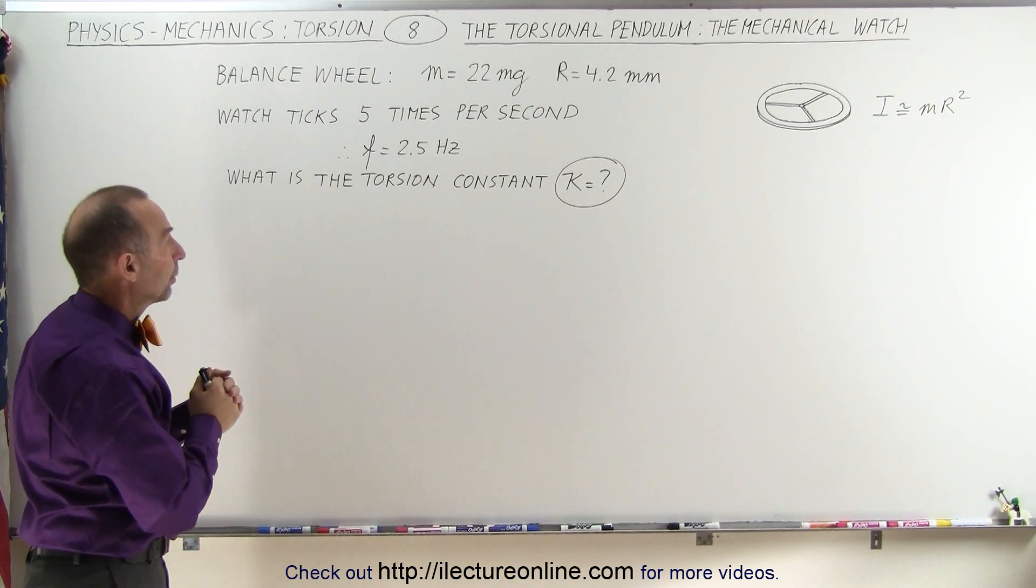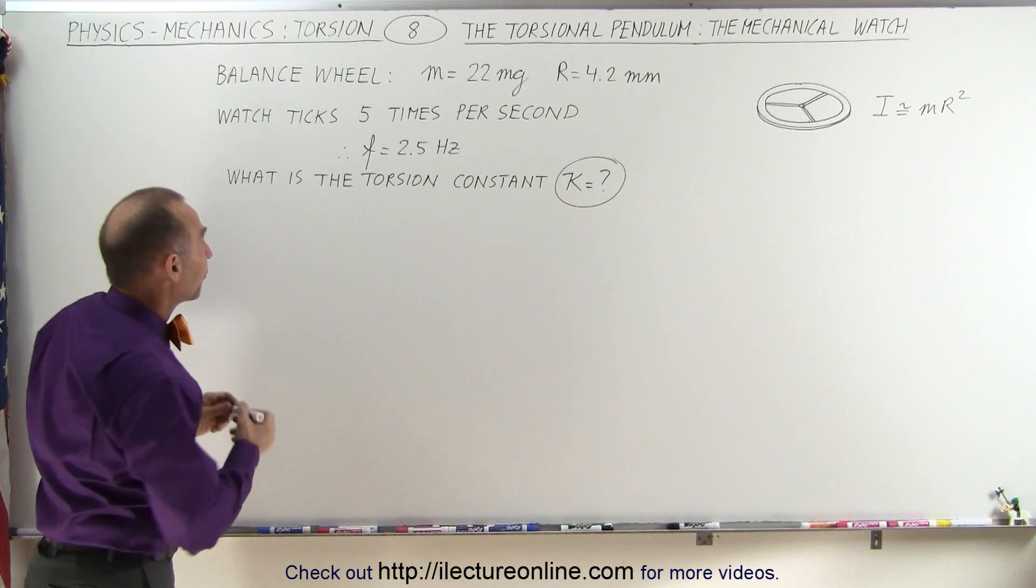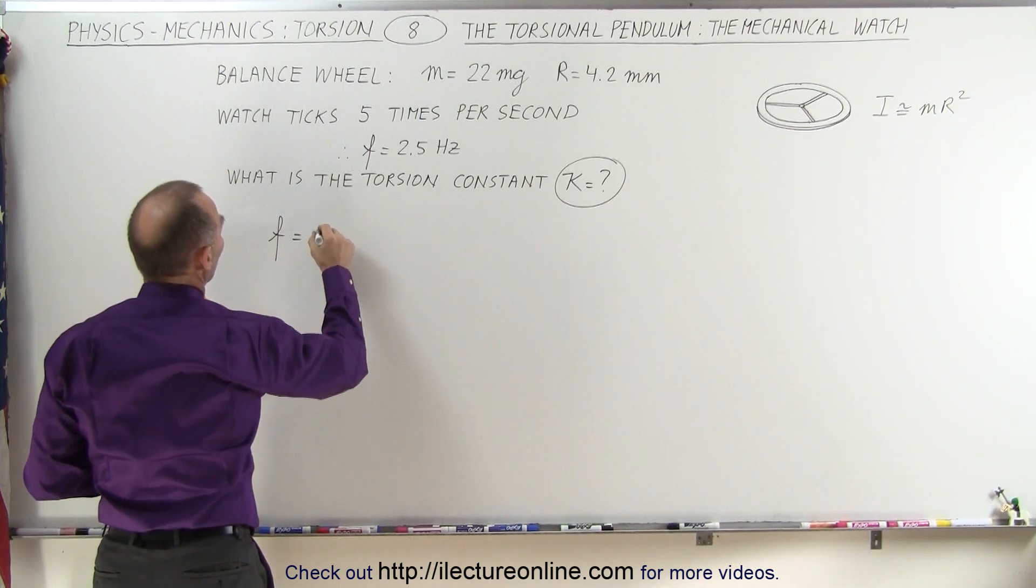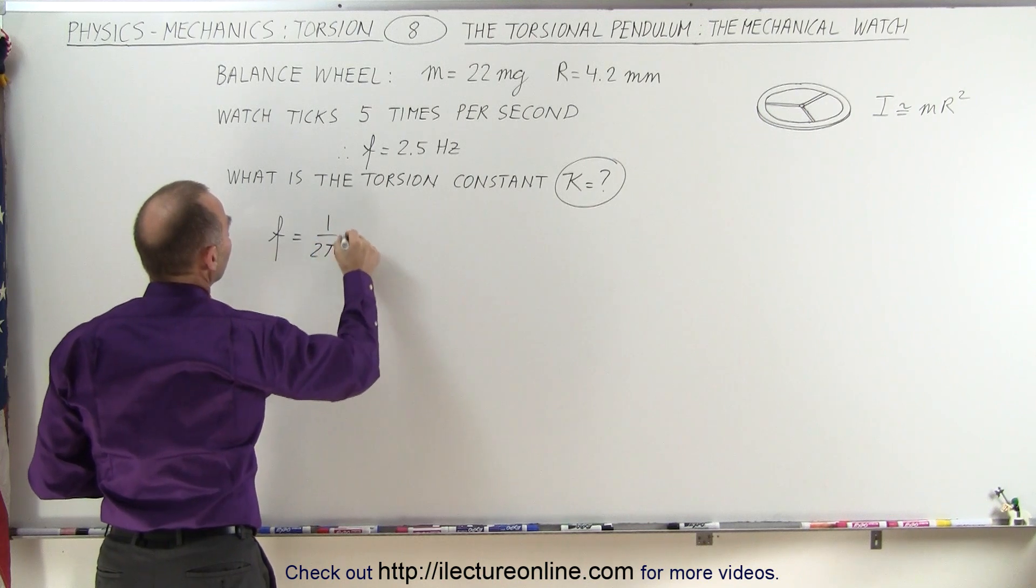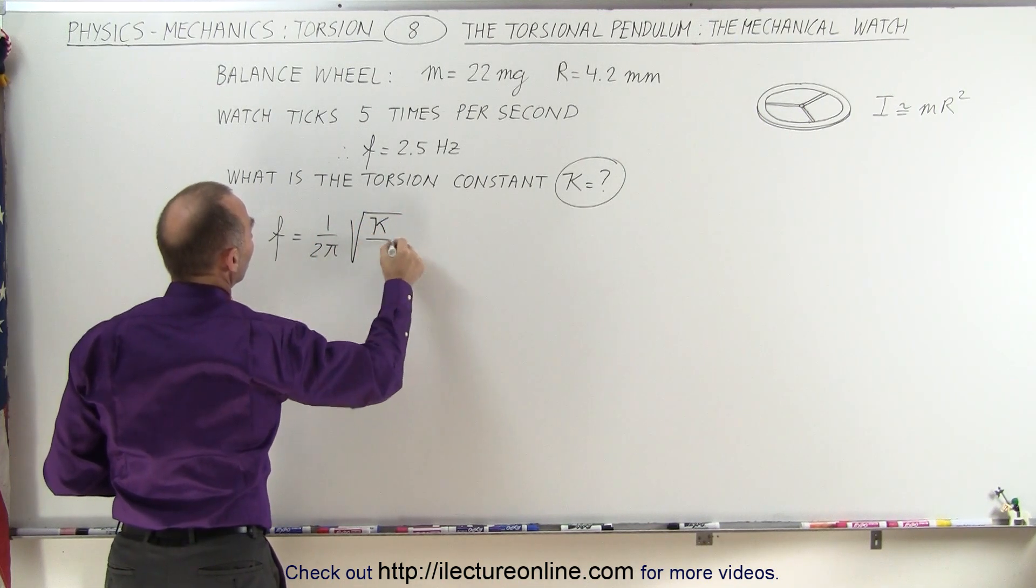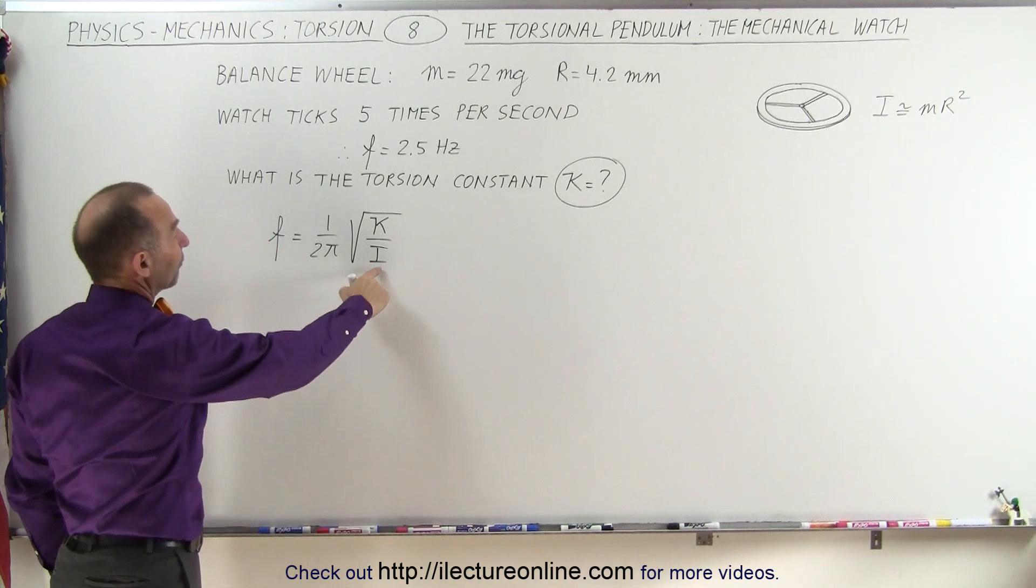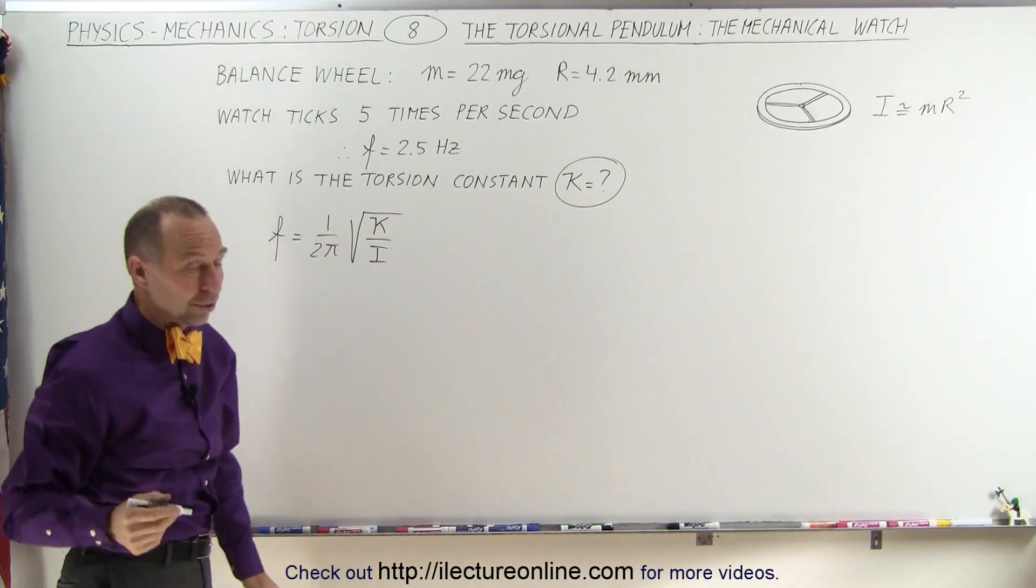All right, how do we do that? Well let's start off with the equation of the frequency. We can say that the frequency is equal to 1 over 2π times the square root of the torsional constant divided by the moment of inertia, which means that we're going to have to find the moment of inertia. Let's go ahead and do that first.